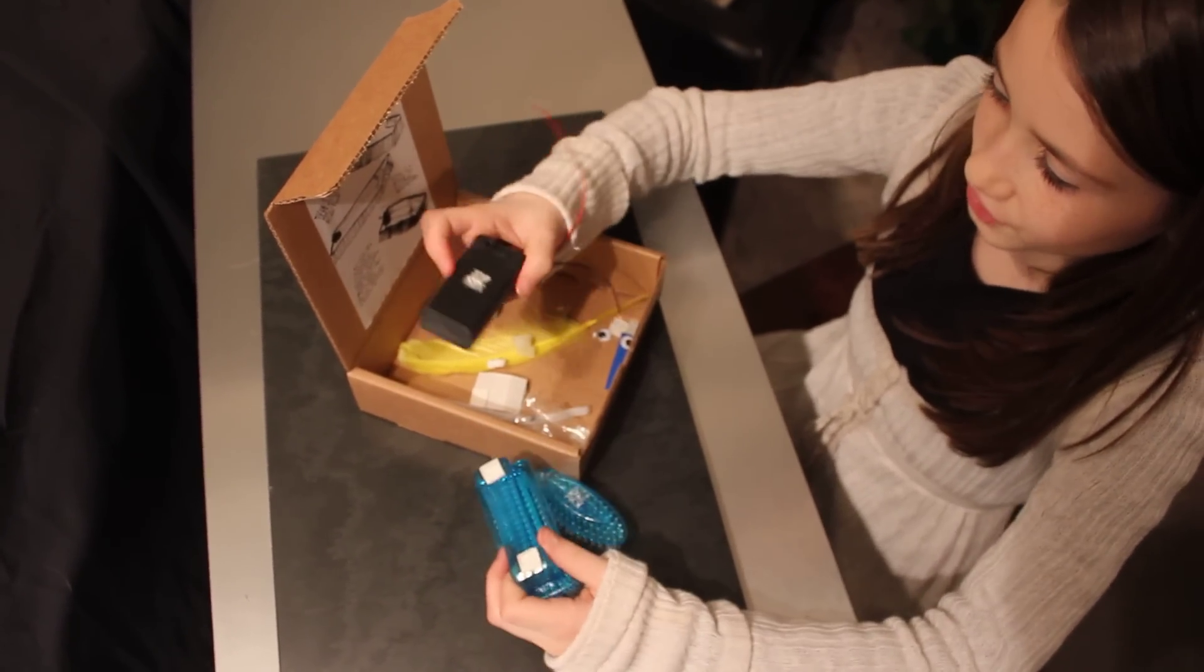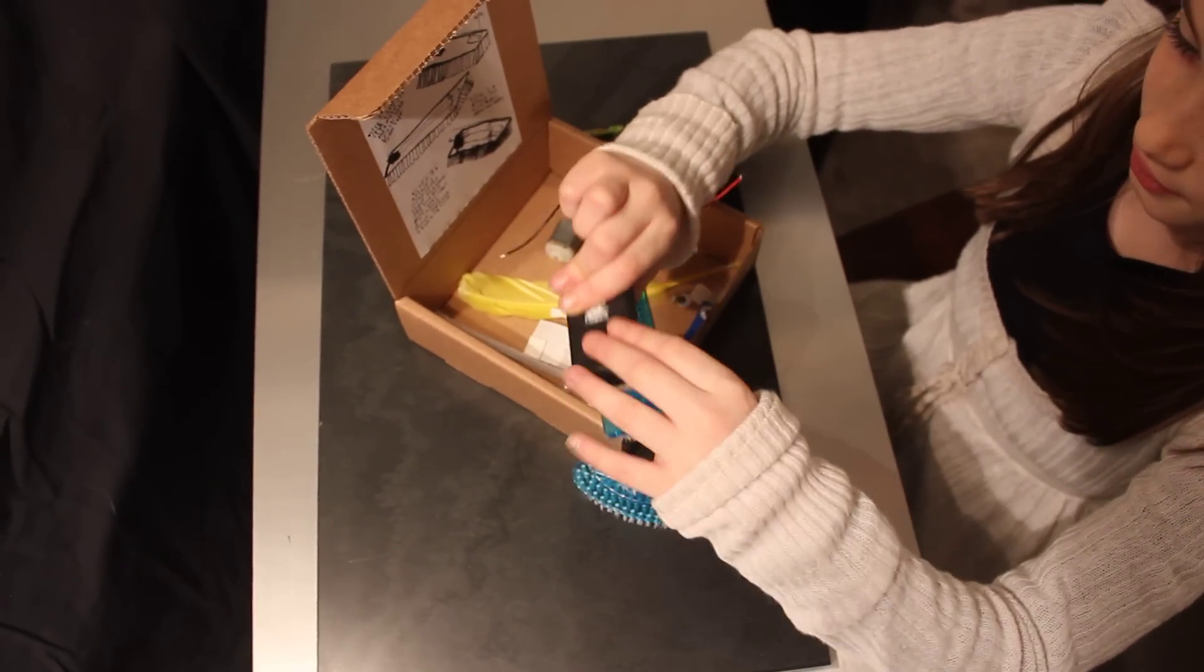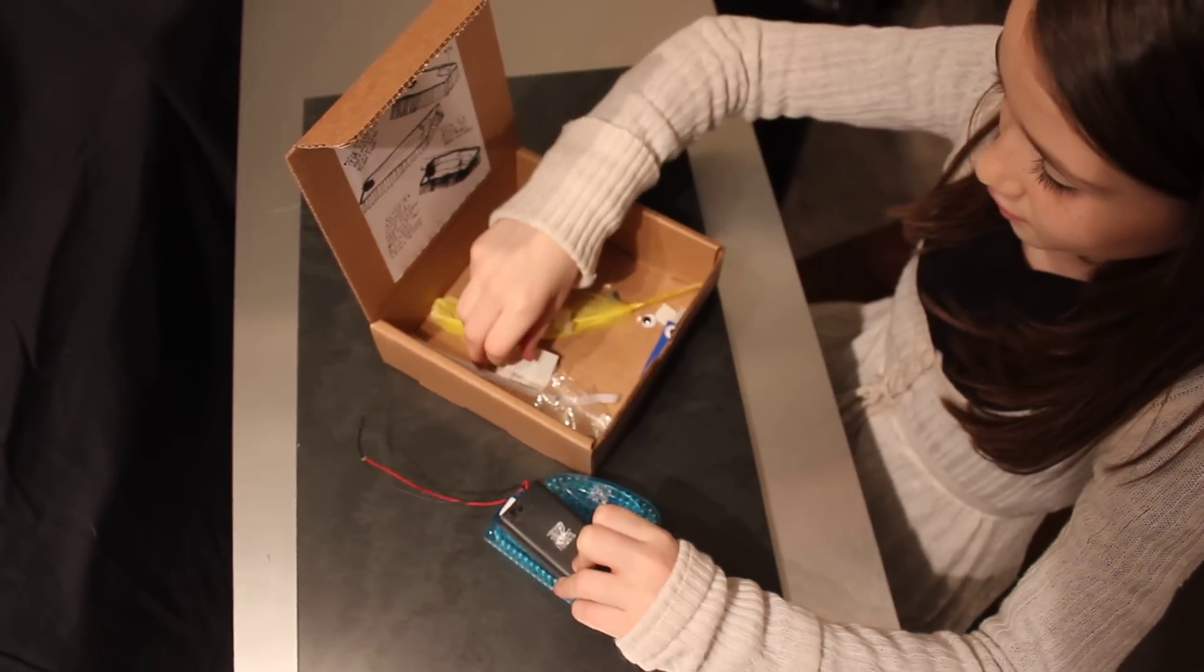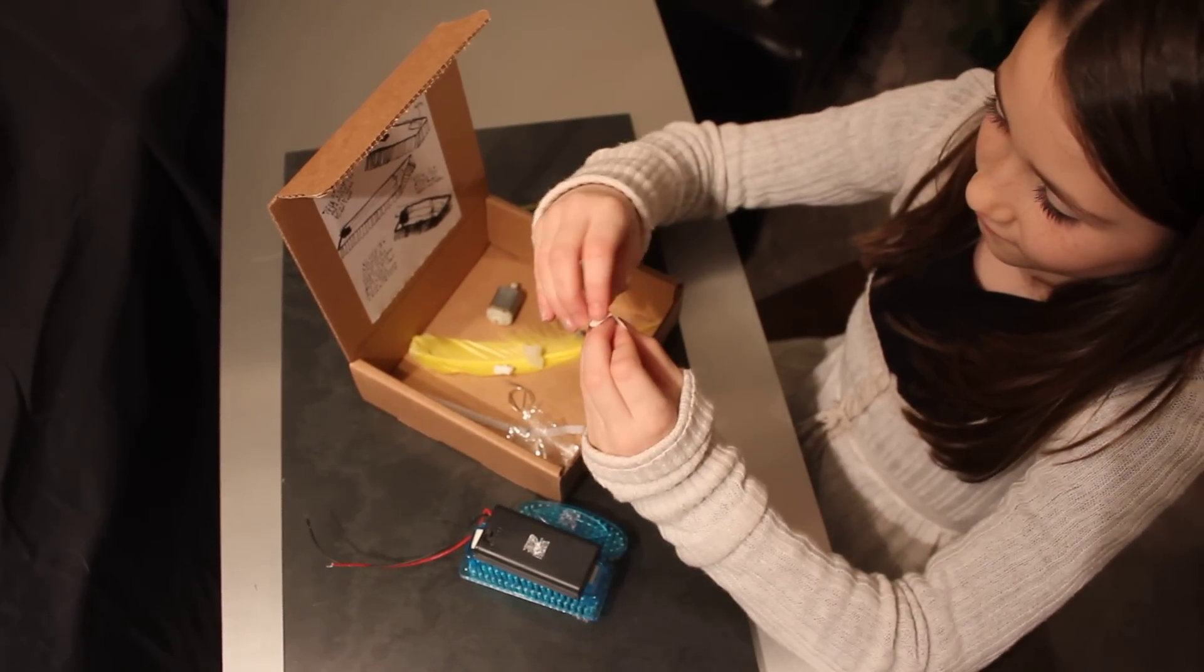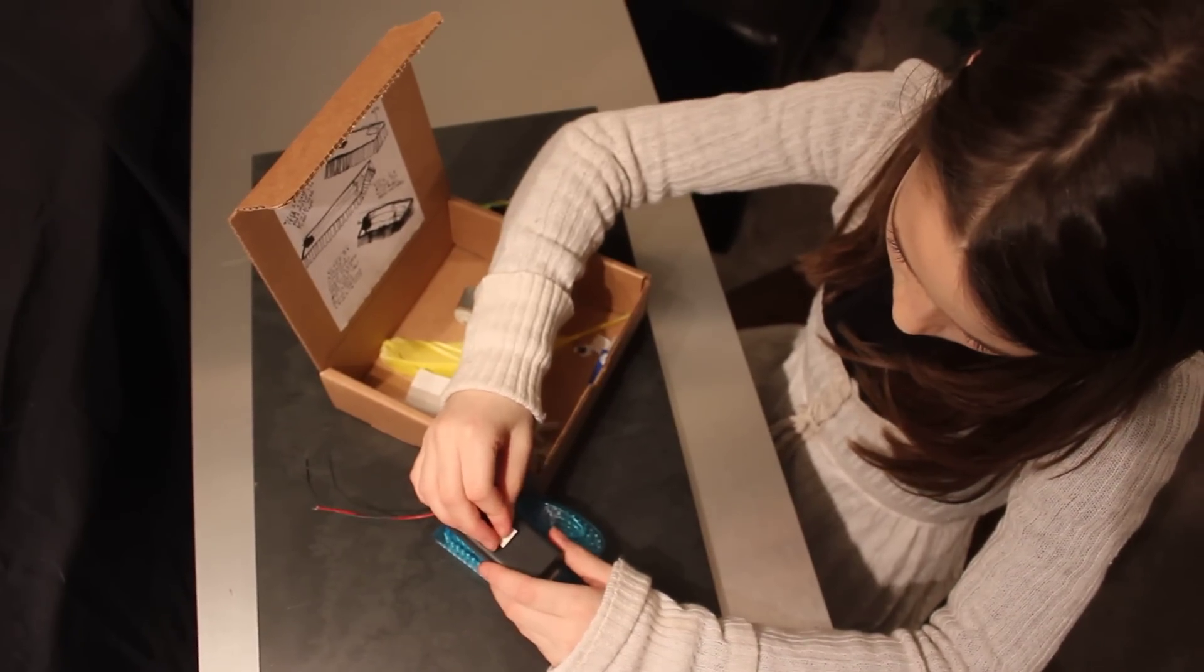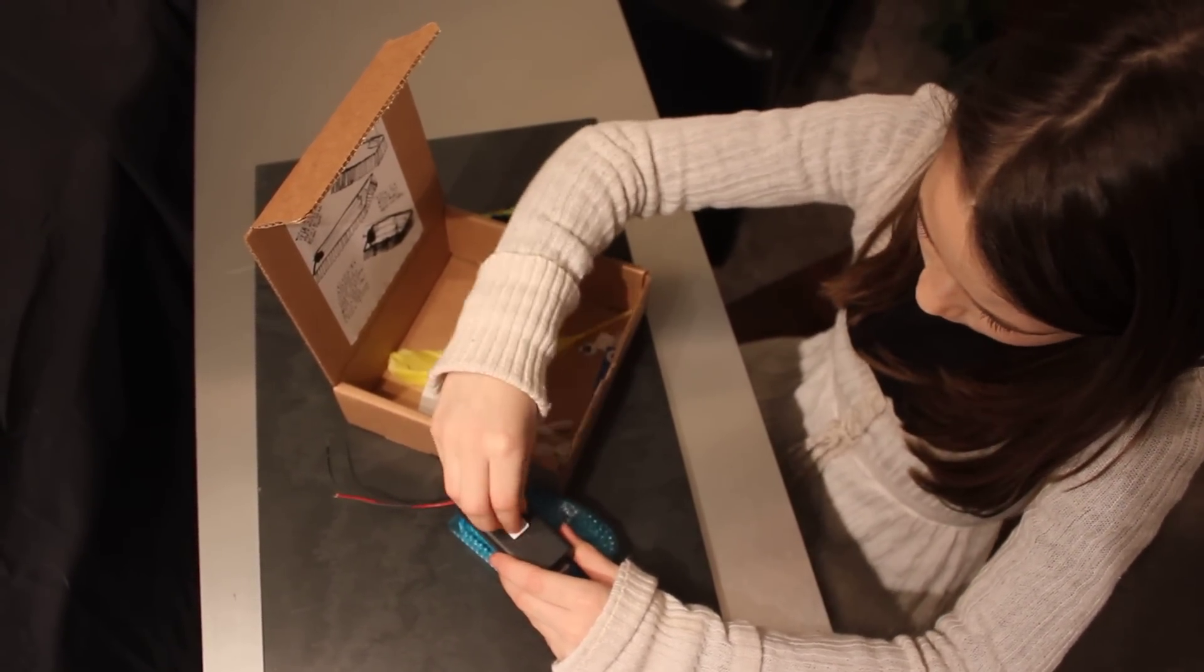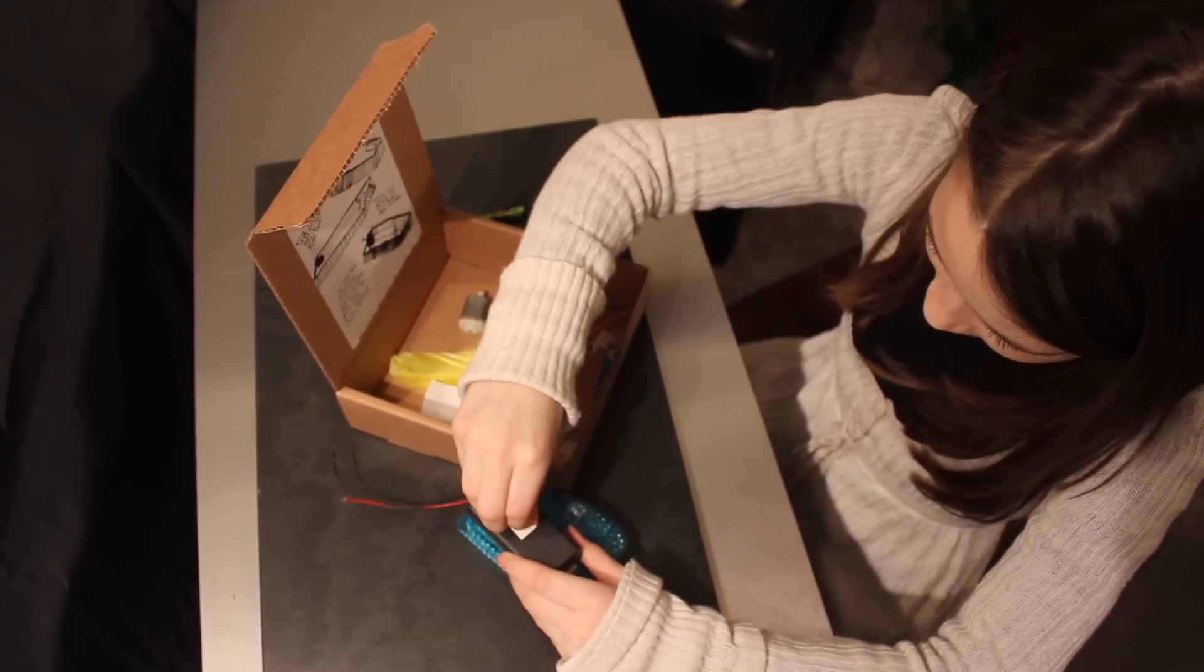Then, with the switch, stick it on to here, with the switch facing up. Then, you take your foam tape again, stick it right in the middle. Then, you peel off the non-sticky stuff.